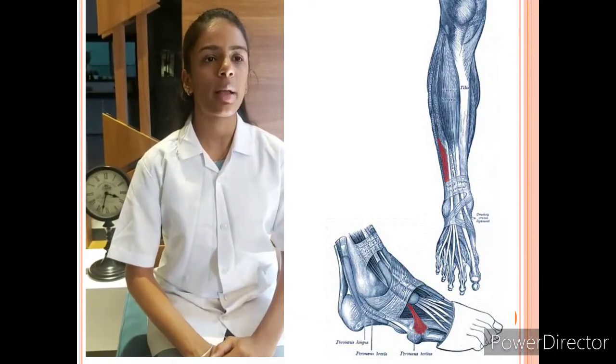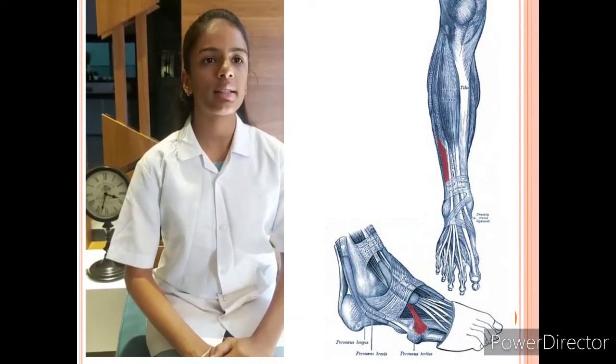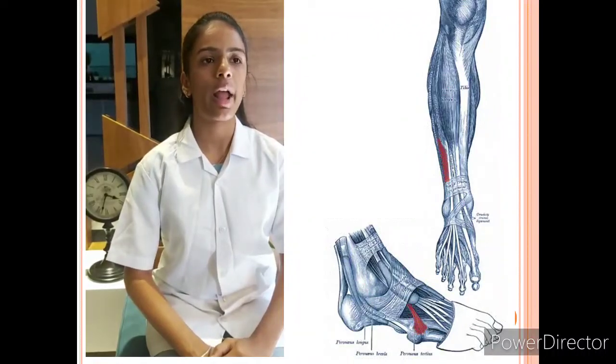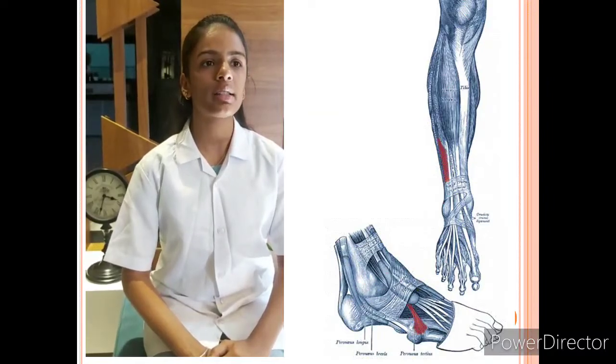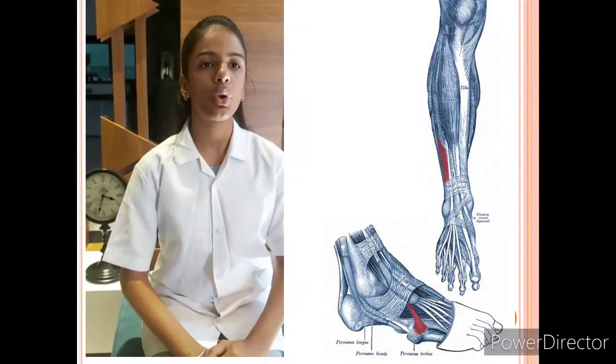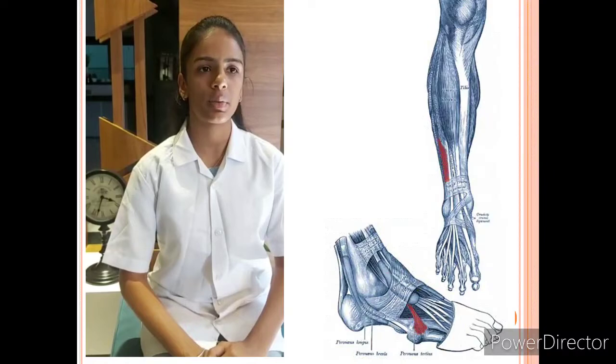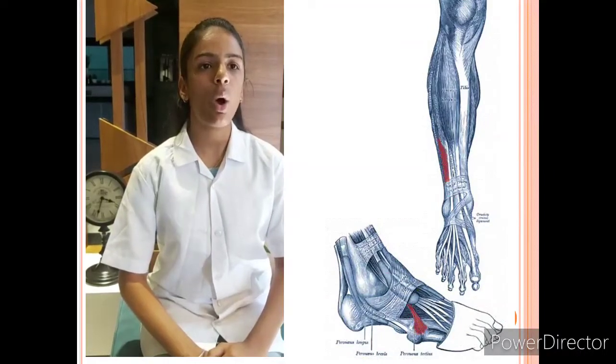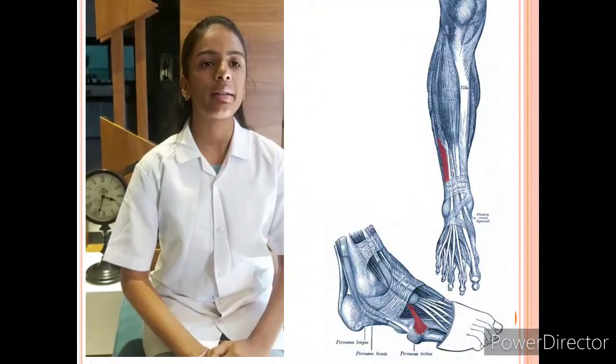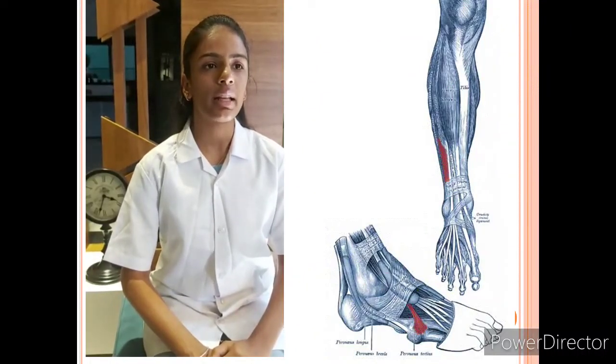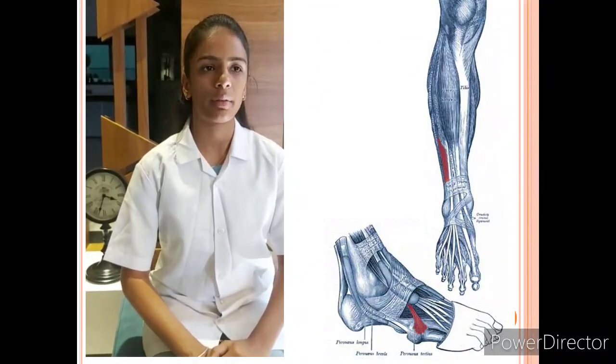It is a separated part of the extensor digitorum longus and may be regarded as its fifth tendon. The Peroneus Tertius Muscle, also known as Fibularis Tertius Muscle, is a muscle of the anterior compartment of the leg, despite its name suggesting it is in the lateral compartment.